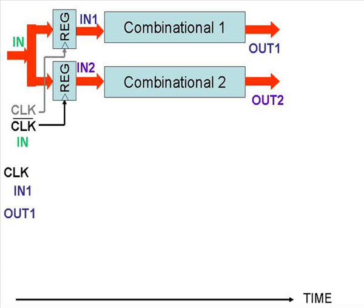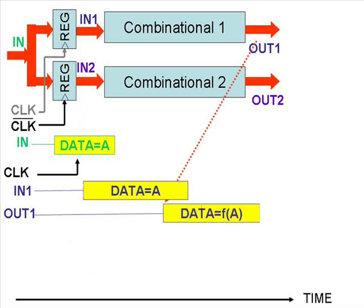Focusing on combinational circuit 1, the data at its input is updated when there is a rising edge of the clock. And the data is available at the output 1 bus after the delay.